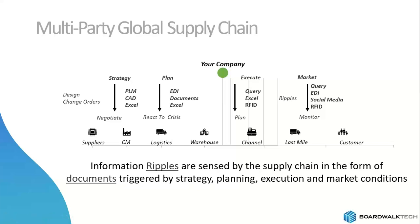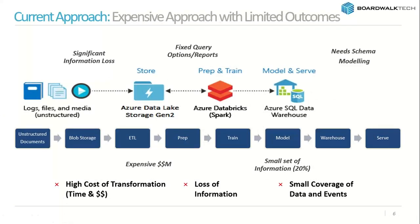The question is how well can your company access and understand these ripples across all different points of data and across all data types, including unstructured data. The current approach is very expensive because in order to make any of this information actionable, you need to get it to SQL. You have to come up with a data model, which immediately limits the scope of information you can carry, because you can't have a data model that accommodates all different types of information coming from all these different people. You end up with fixed queries, fixed reports, and your IT group needs to go through very complicated schema modeling.